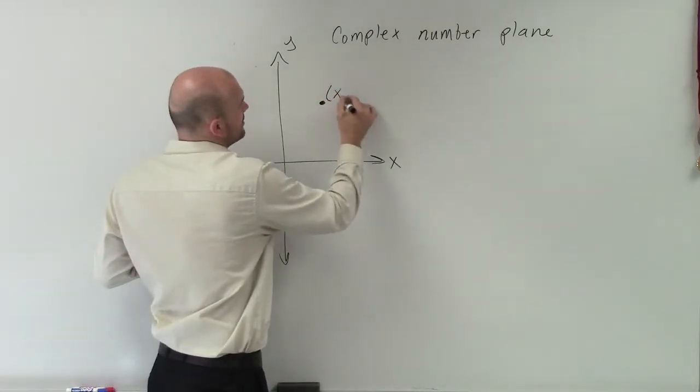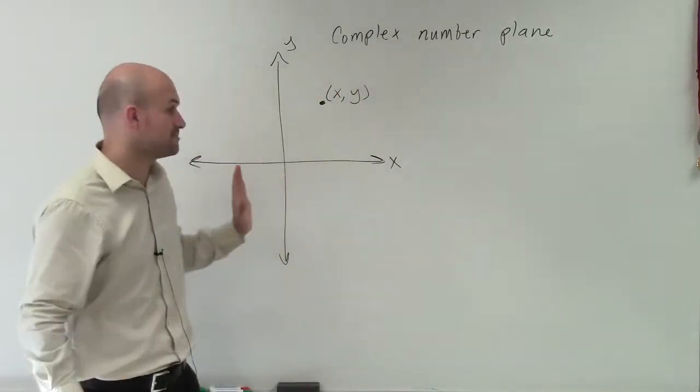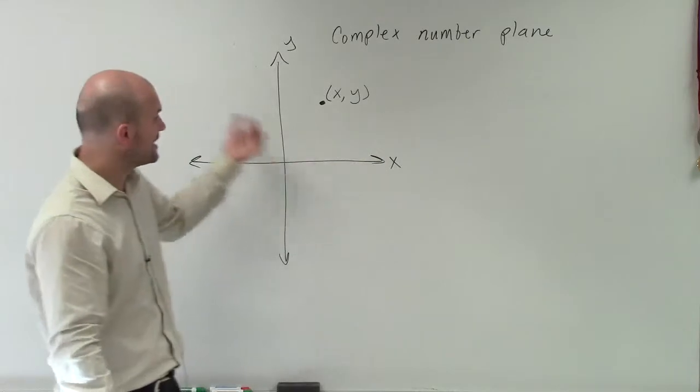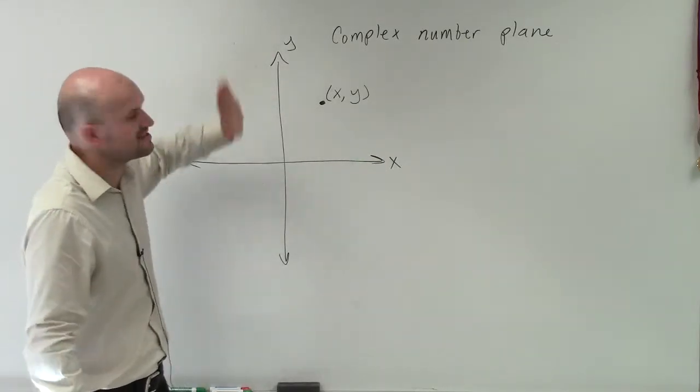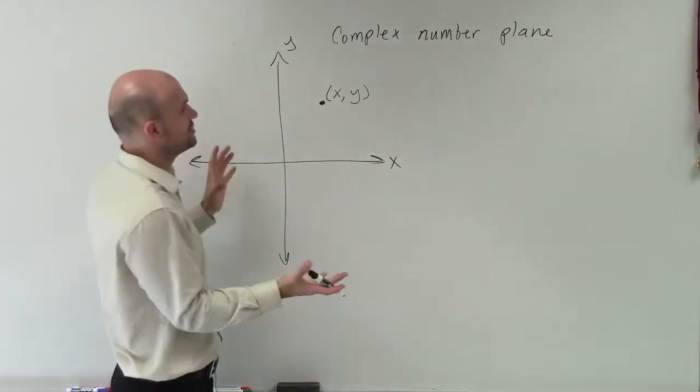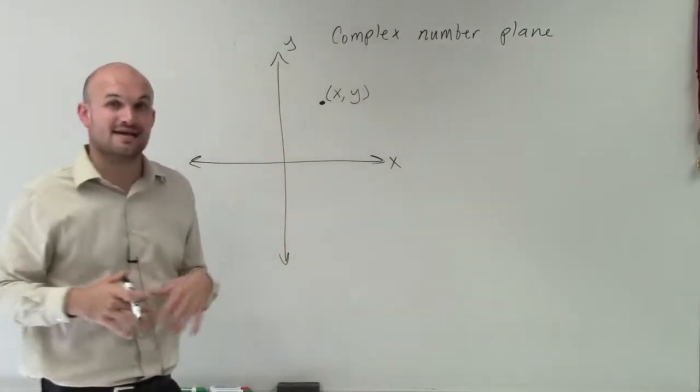we had a set of points which we'd label x comma y. And obviously, if x was positive, we'd go to the right. x was negative, we'd go to the left. y was positive, we went up. y was negative, we went down. And then we took those two values and wrote them as a point.